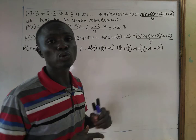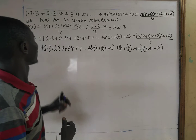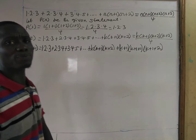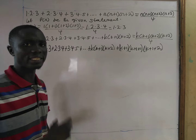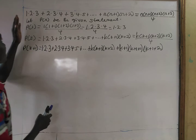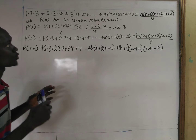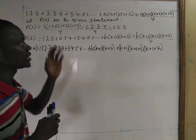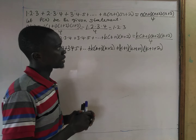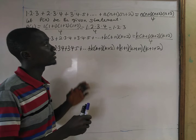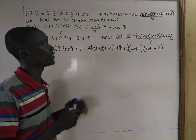In this lecture, we are going to prove using the principle of mathematical induction. The question is: prove that for all n, 1×2×3 + 2×3×4 + 3×4×5 + ... + n(n+1)(n+2) equals n(n+1)(n+2)(n+3) all divided by 4.